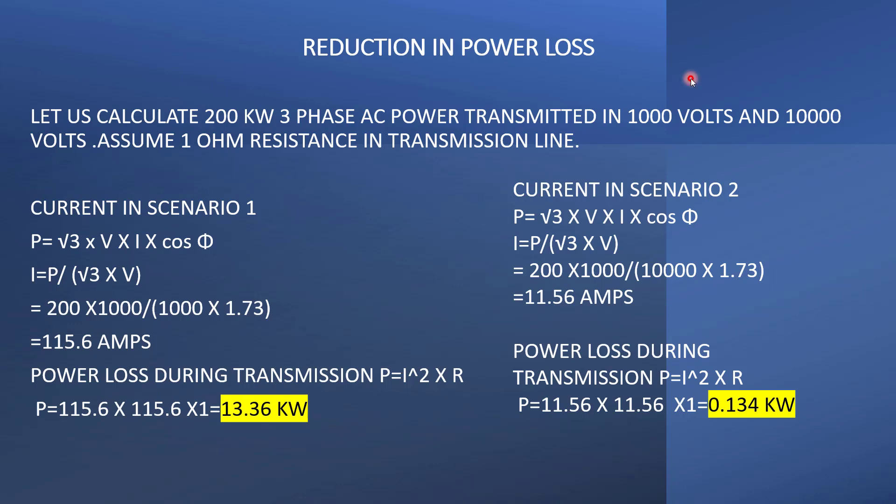Comparing both scenarios: in Scenario 1 using 1,000 volts, the power loss was 13.36 kilowatts; in Scenario 2 using 10,000 volts, the power loss is only 0.134 kilowatts. It is clear that increasing the transmission voltage significantly decreases power loss. Note that this calculation is for demonstration — power plants are designed in megawatts, and 200 kilowatt transmission is very small in practical cases. Actual transmission voltages are also much higher than 1,000 or 10,000 volts.